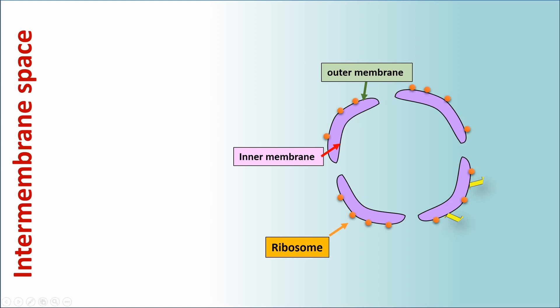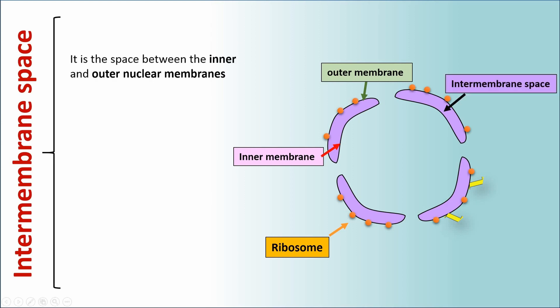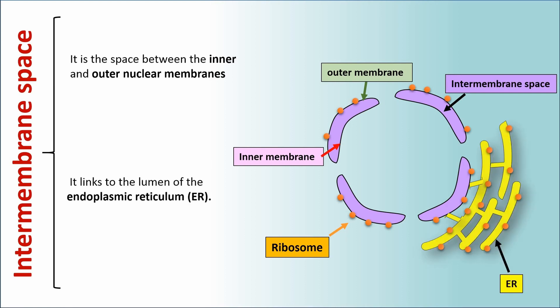Intermembrane space. It is the space between the inner and outer nuclear membranes. It links to the lumina of the endoplasmic reticulum or ER.